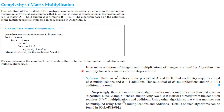For two n×n matrices with integer entries: since there are n² entries in the product, and for each entry a total of n multiplications and n−1 additions are needed, the total number of multiplications is n³ and the total number of additions is n²(n−1), which is O(n³). So the complexity of this matrix multiplication algorithm is O(n³).